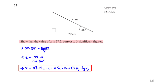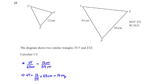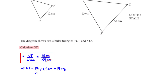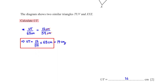The diagram shows two similar triangles TUV and XYZ. Calculate UT. For similar shapes the ratio of corresponding sides must be equal. Making UT the subject gives UT equal to 14 centimetres.